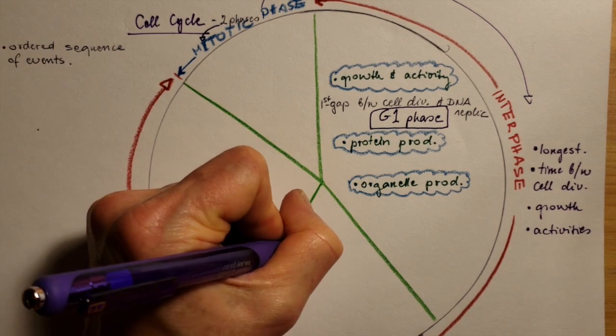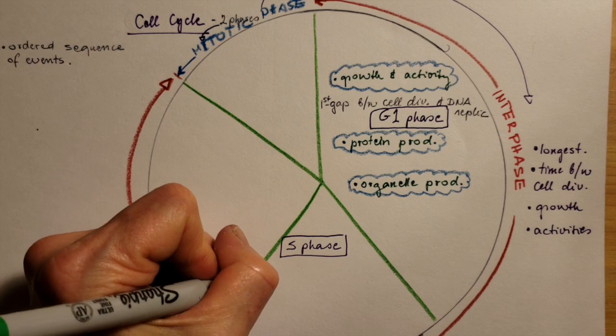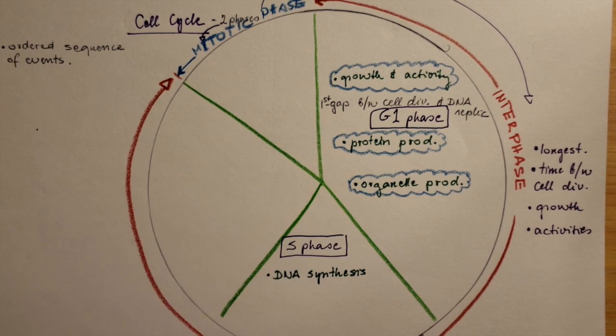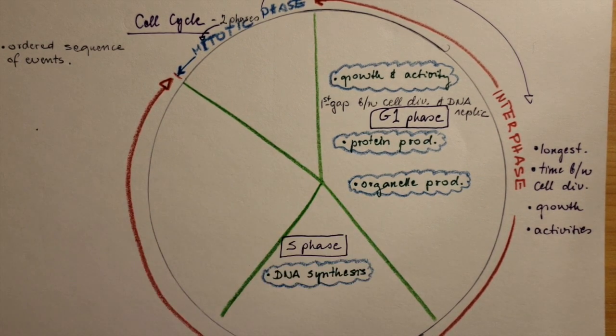The S phase is the second one. The S stands for synthesis. And the DNA, the genetic material, gets duplicated during that phase.